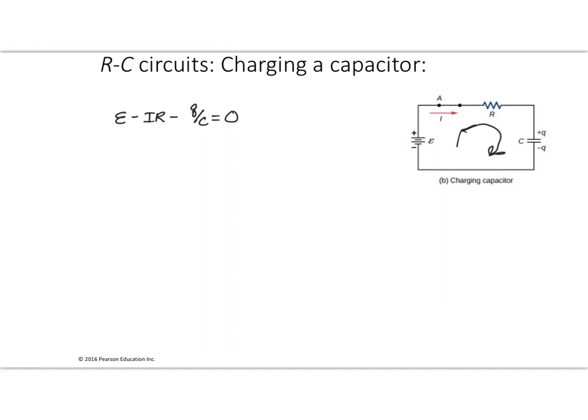An important thing to note is I use little q to represent the fact that the charge on the capacitor is constantly changing. The little q just indicates whatever the value happens to be at that instant in time. This expression for potential comes from the definition of capacitance — it's equal to the charge over the voltage. If we rearrange that to find the potential drop across the capacitor, we get the expression that you see circled here.